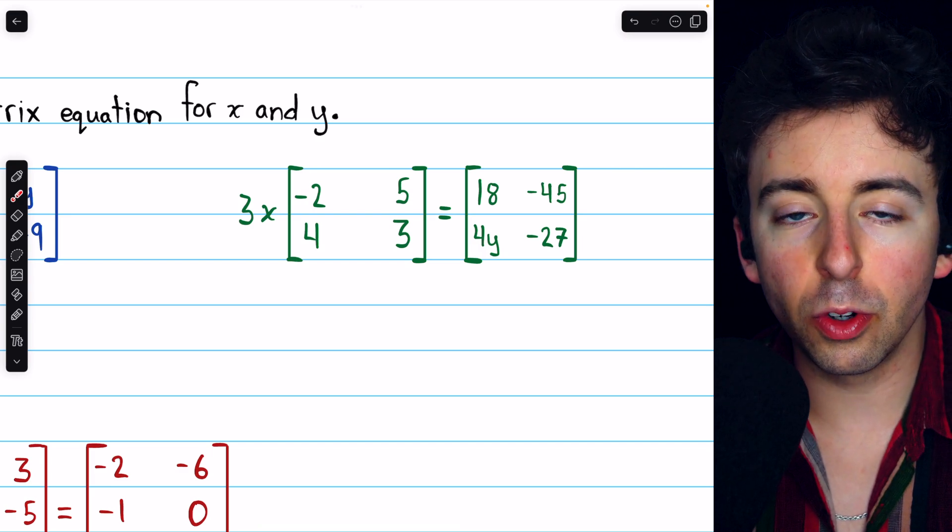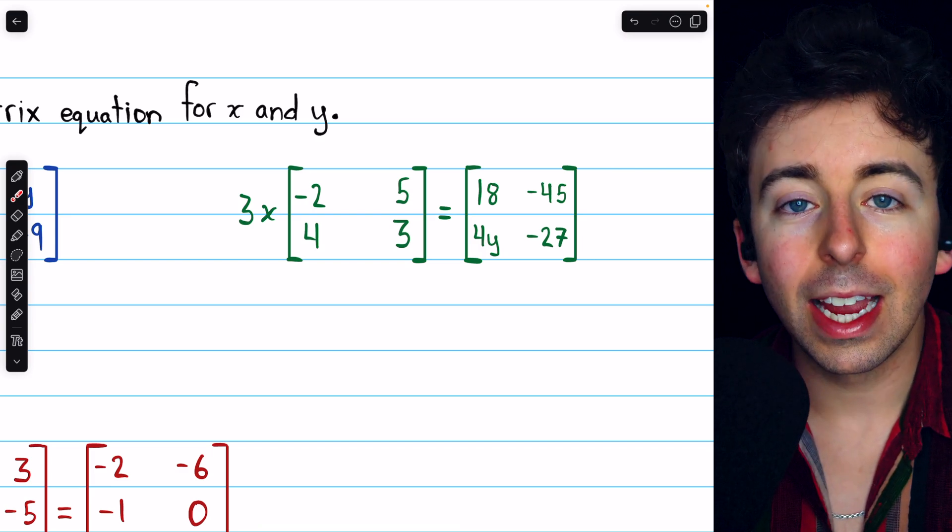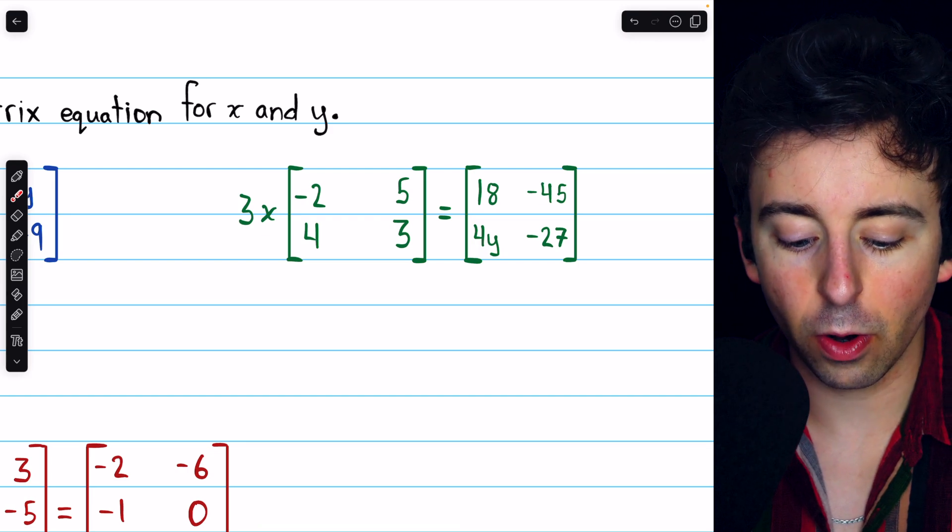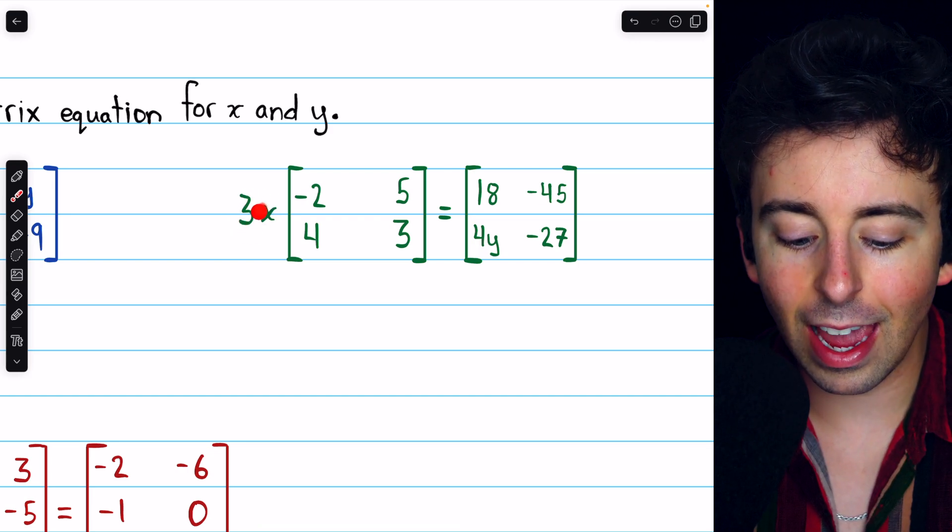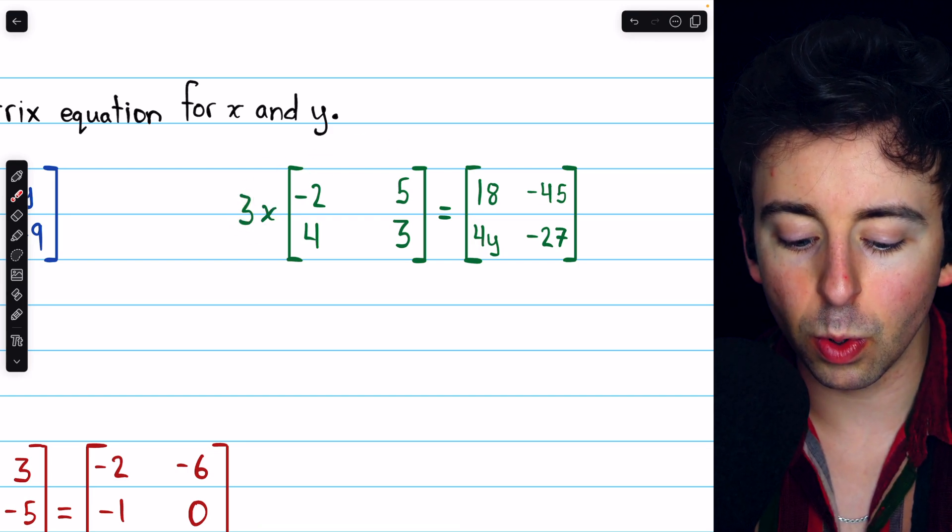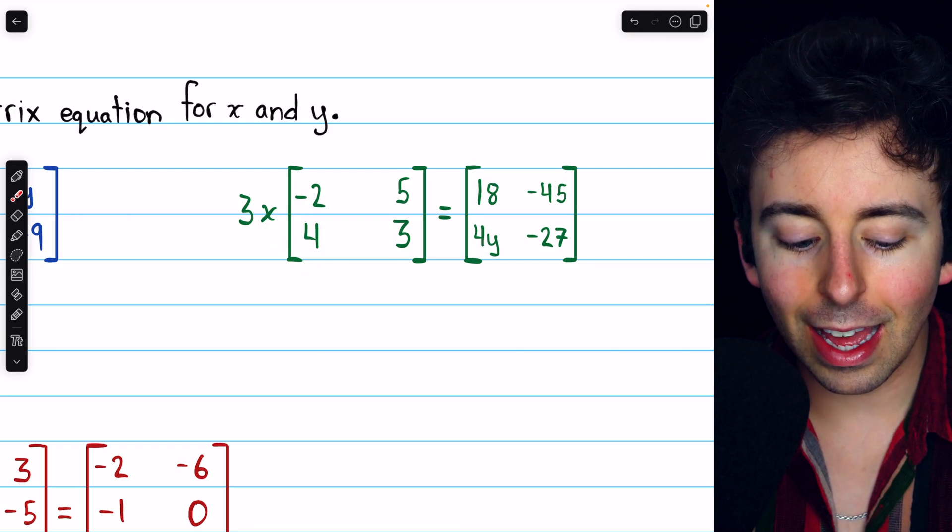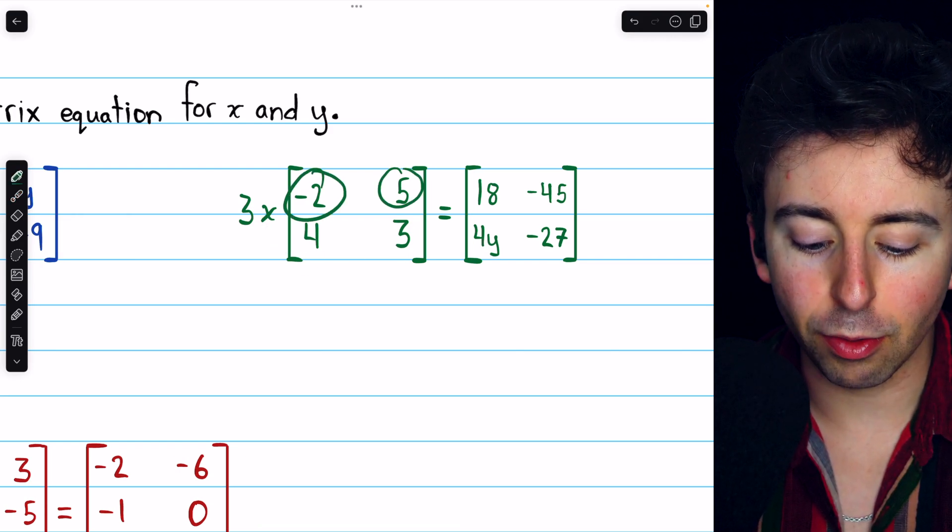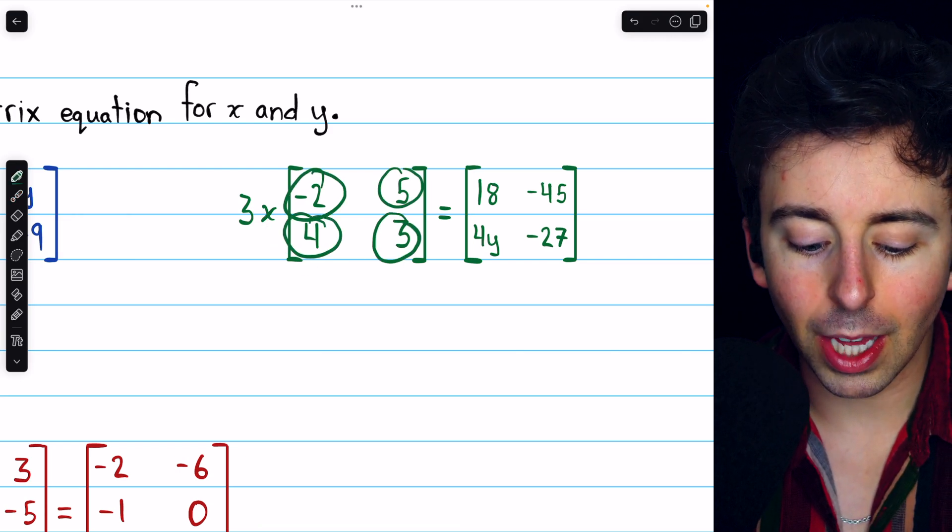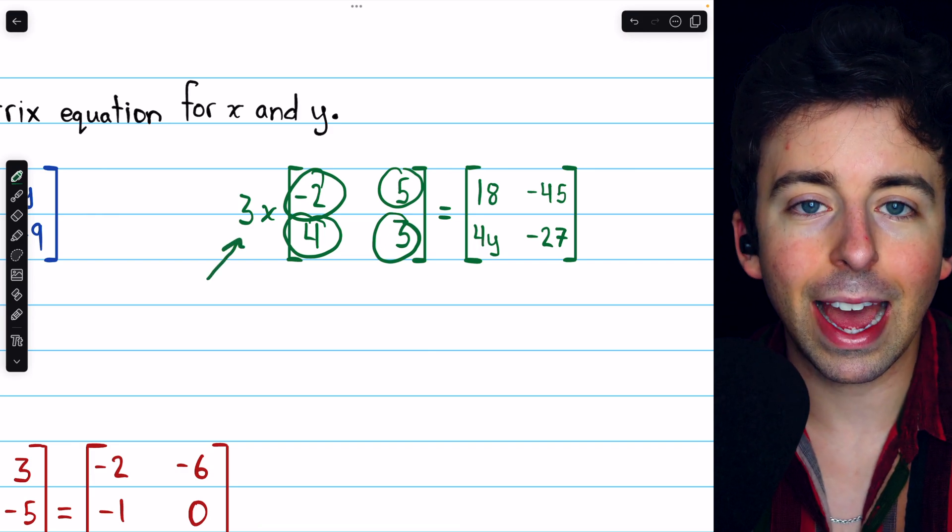But the matrix on the left is being multiplied by the scalar 3x. So, in order to do what we did in the previous problem and set corresponding entries equal to each other, we should distribute this scalar 3x through the matrix on the left. That just means every entry in this matrix needs to get multiplied by that scalar 3x.